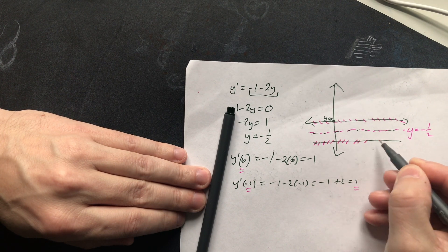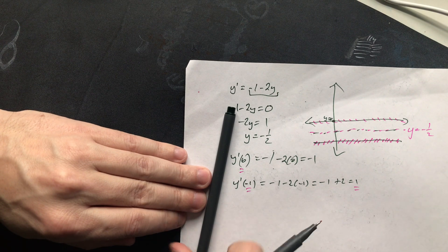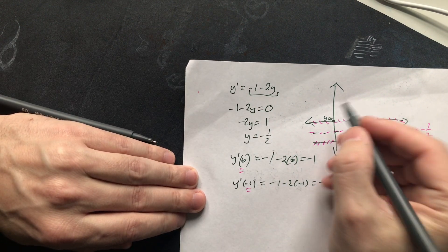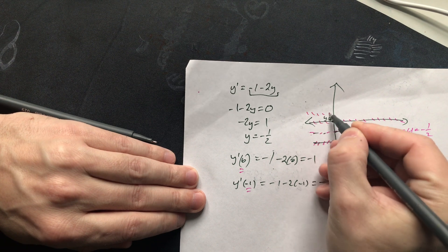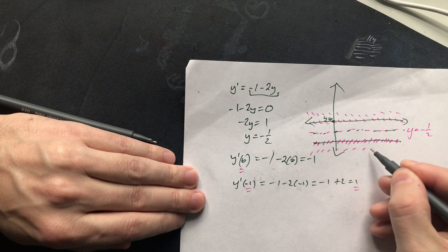Now you could repeat this additionally for more inputs, but if you did that, you discover pretty quickly that in fact, the slope field looks like this in general. And the same thing over here, the slope field looks like this.